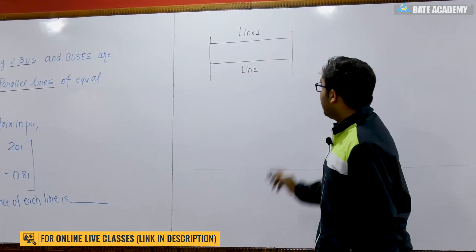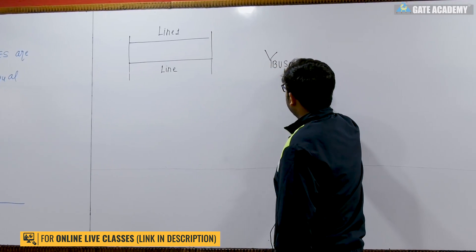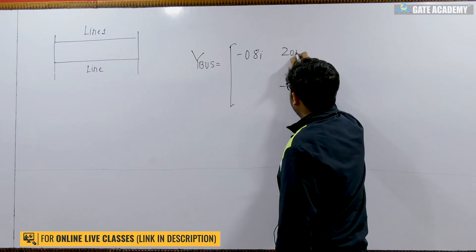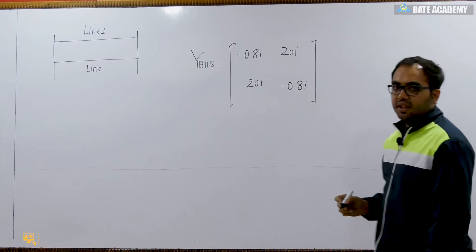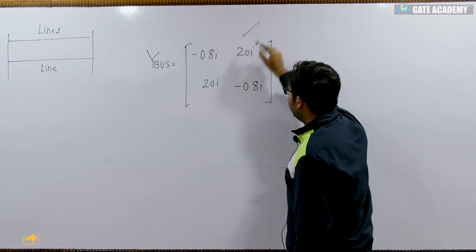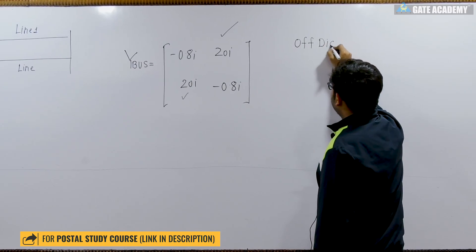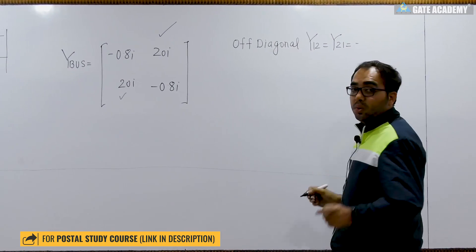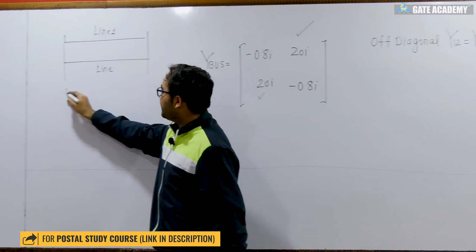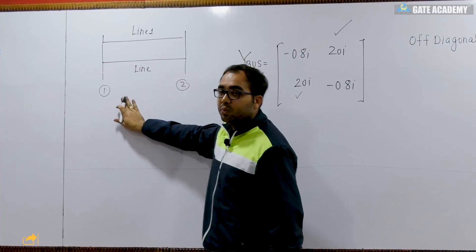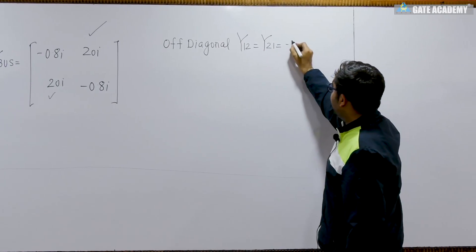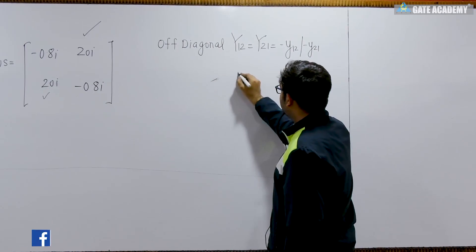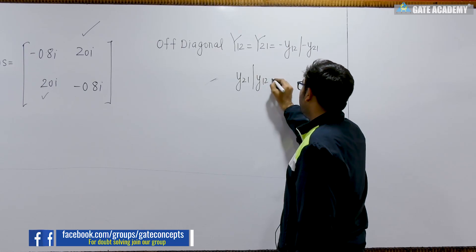Now the Y-bus admittance matrix is given: the off-diagonal elements are minus 0.8j and the diagonal elements are 20j. Out of the properties of the Y-bus, the off-diagonal property states that Y₁₂ should be equal to Y₂₁, and should be equal to the negative of the admittance connected between bus one and bus two.